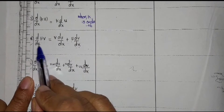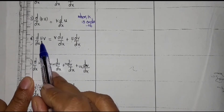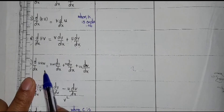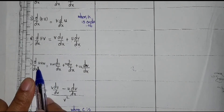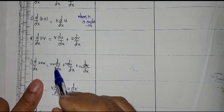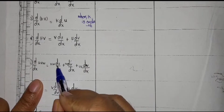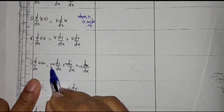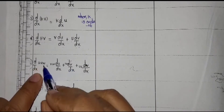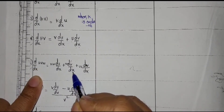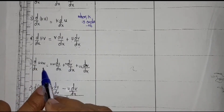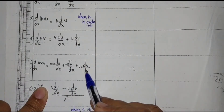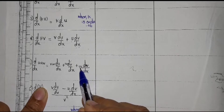Next, derivative of u, v, w. The way we solved d upon dx of uv, we similarly find the formula for d upon dx of uvw. First, take the derivative of the first element: du upon dx, and keep the rest outside. Second, take the derivative of v: dv upon dx, and keep the rest outside. Third, take the derivative of w: dw upon dx, and keep the rest outside.